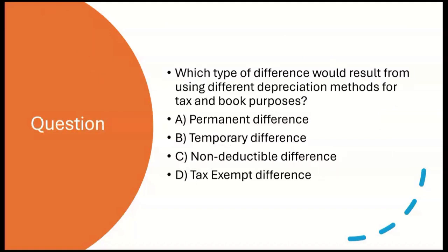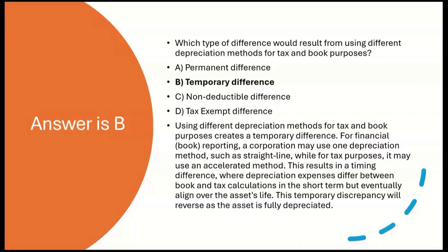Which type of difference would result from using different depreciation methods for tax and book purposes? A: permanent difference. B: temporary difference. C: non-deductible difference. D: tax-exempt difference. The answer is B — a temporary difference. Using different depreciation methods for tax and book is very normal. For financial reporting a corporation may use straight-line depreciation, while for tax purposes you use accelerated depreciation. This results in a timing difference where depreciation expense differs between book and tax in the short term, but they align over the asset's life as the asset is fully depreciated.